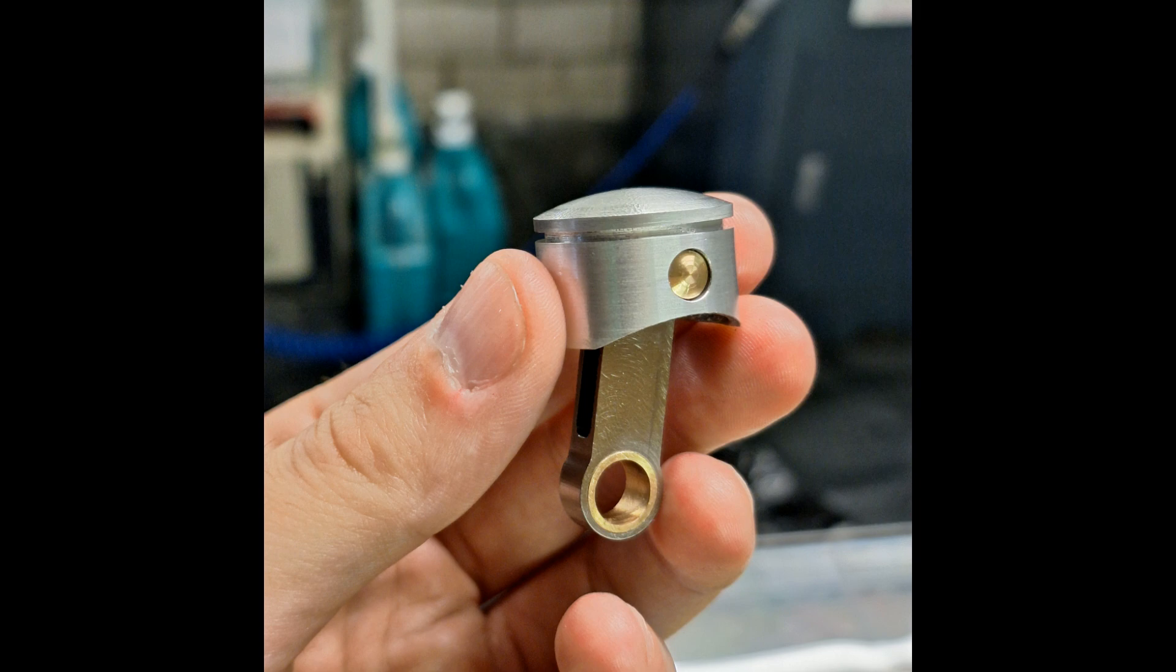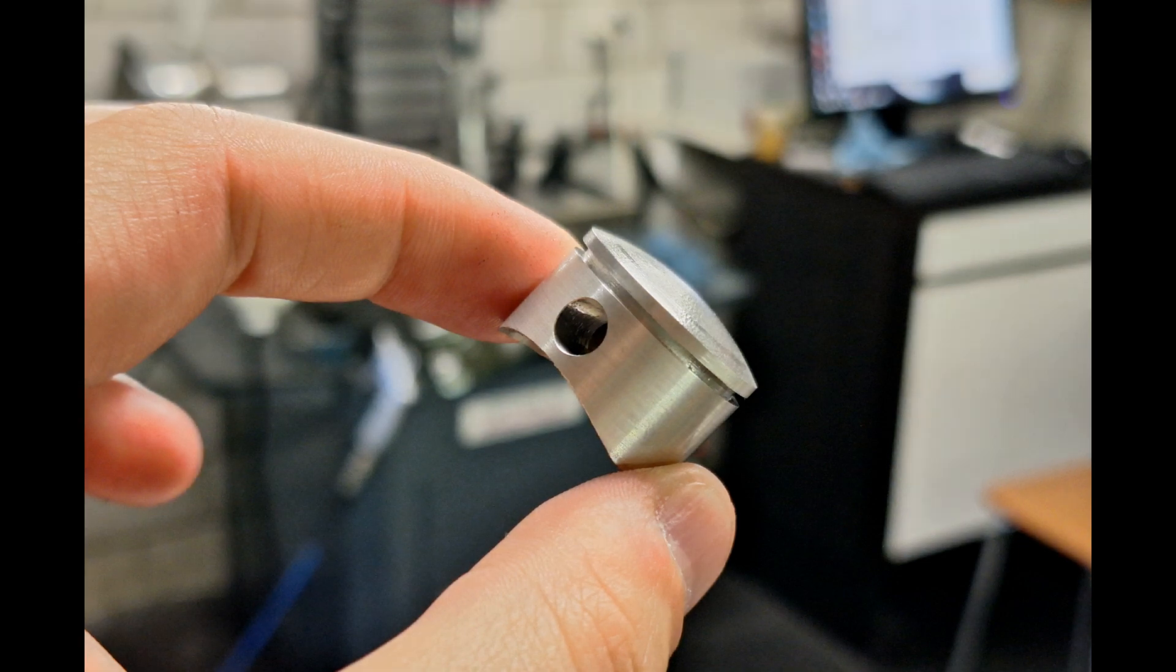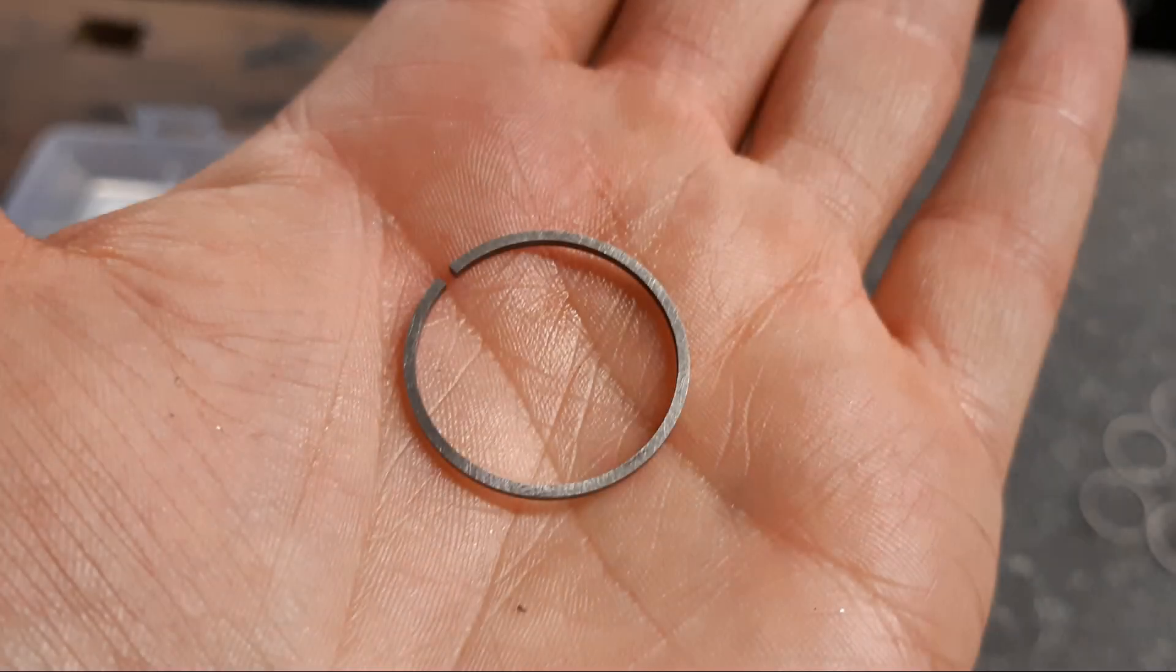The connecting rod is made out of grade 5 titanium with bronze plain bearings. The piston is made out of special aluminum alloy with a high silicon content. It has one piston ring made of cast iron.